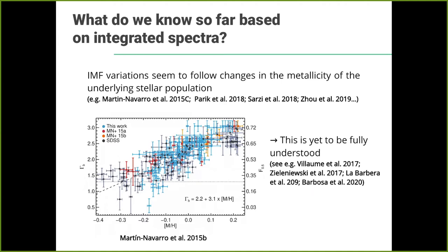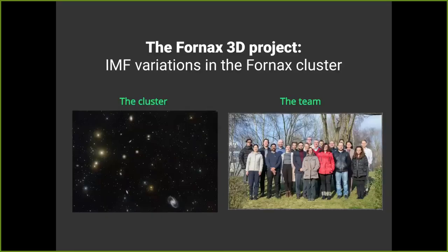IMF variations also seem to track changes in metallicity. We first found this in CALIFA in 2015. It seems that more metal-rich regions in galaxies — usually in the center — are those that exhibit this enhanced fraction of low mass stars. However, we are also fairly certain that metallicity alone is not able to fully capture the variety of IMF variations we see, and there is now plenty of work showing we need more than metallicity.